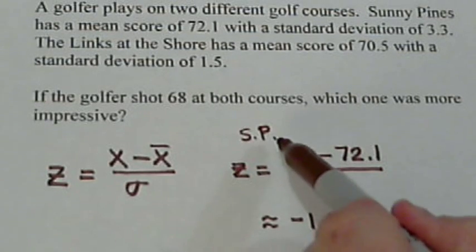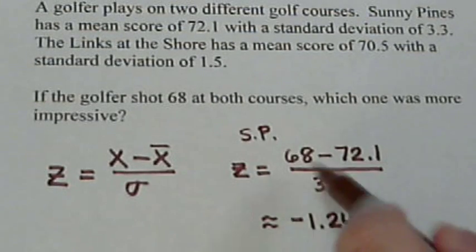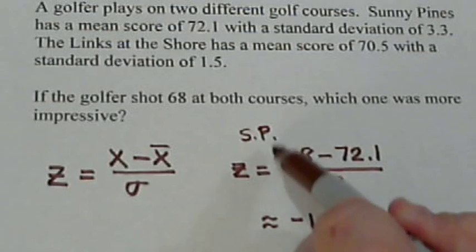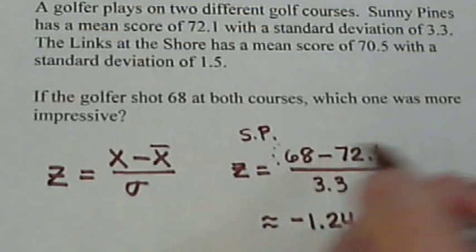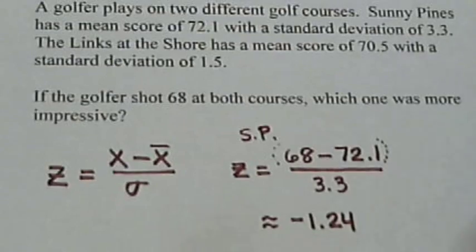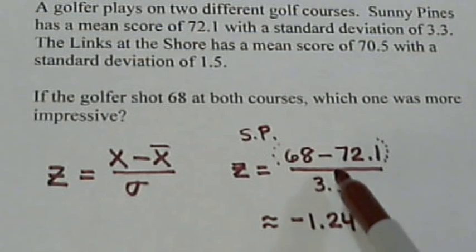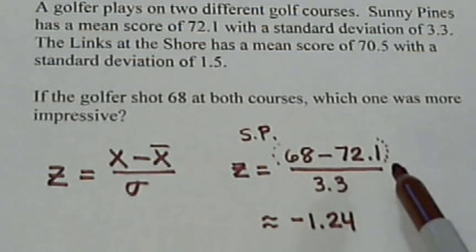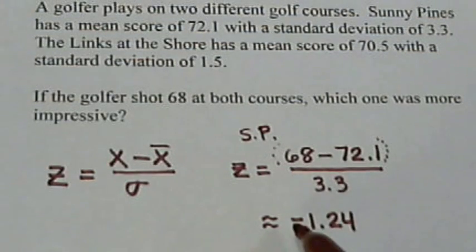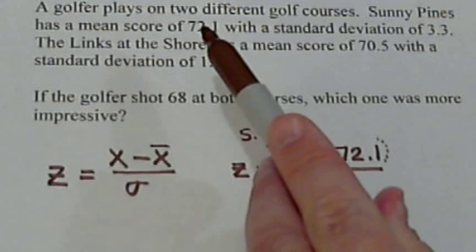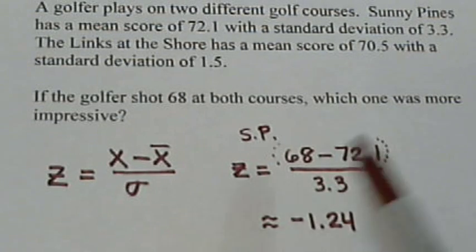Now, a couple things before we continue. If you're going to try to put all this in at one time on the calculator, make sure that you include parentheses around the whole numerator. Because in this case, order of operations, you want to do the subtraction before the division. And in order to force that to happen, you need those parentheses there. Also, we got a negative, which means this golfer was below the mean. And we see his score of 68 was below the mean.